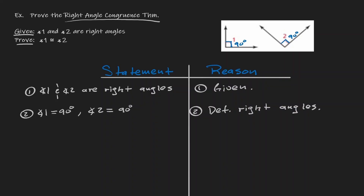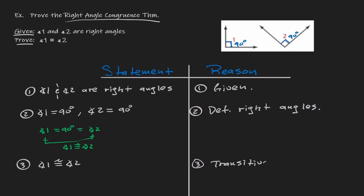At this point we're pretty much done. Let's think about this — and what I'm going to write down in green is not part of the proof, but I want you to think about it. We are saying that angle one is congruent to 90 degrees, but also angle two is congruent to 90 degrees. So it's fair to say that angle one is congruent to angle two. The property we are using here is the transitive property. So my third step is: angle one is congruent to angle two, and the reason is the transitive property.